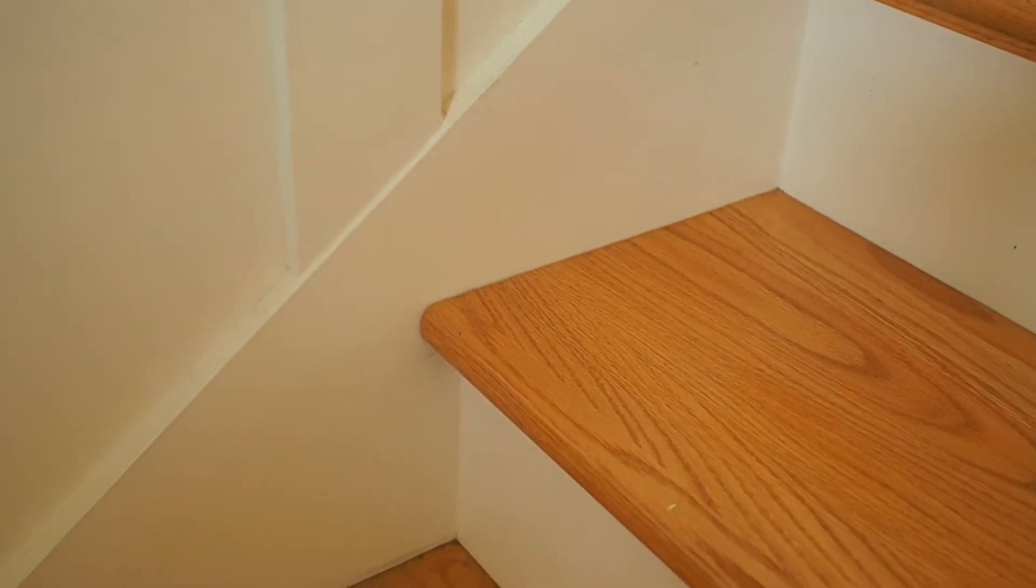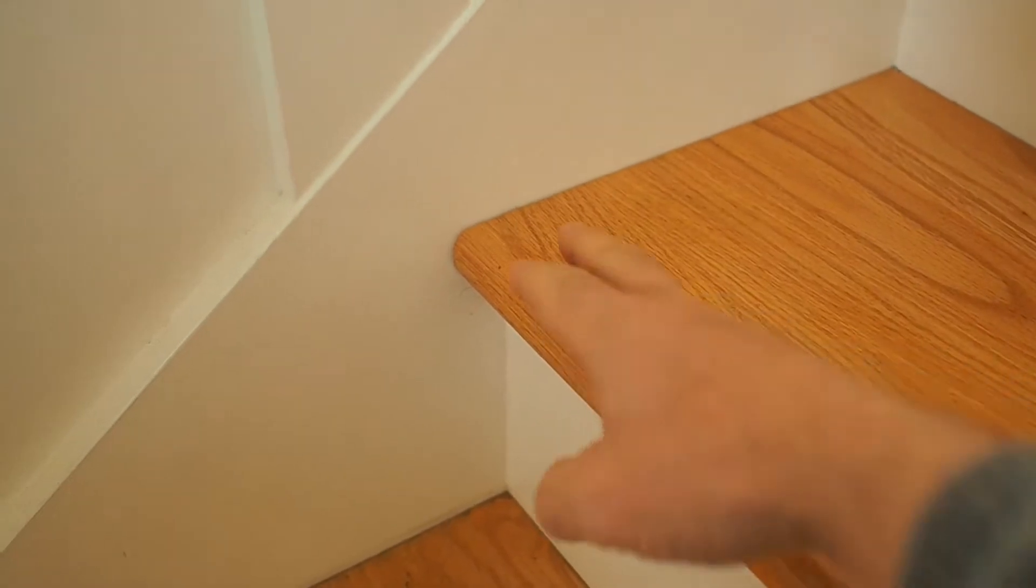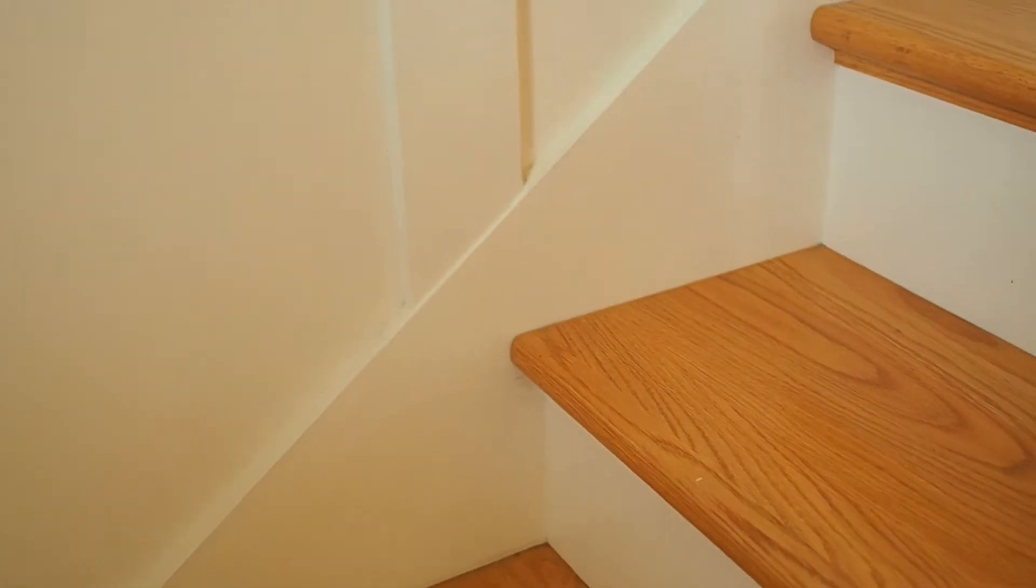There are some important details for the cutout stringer that's underneath the tread over here against this wall. In this case, this is an exterior wall. So behind the wall finish, you're going to find a vapor barrier and insulation.